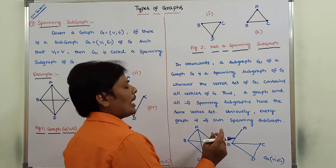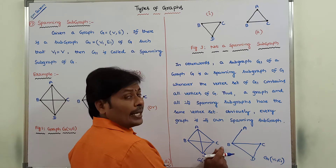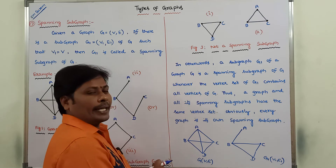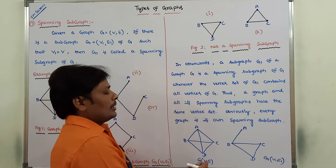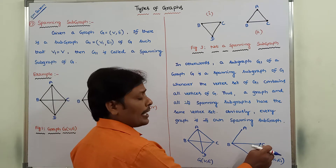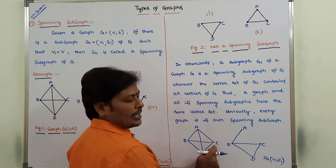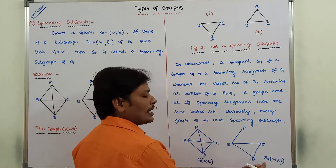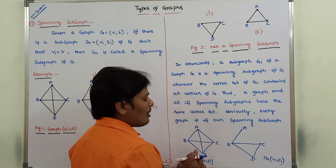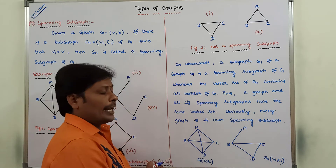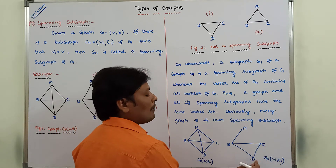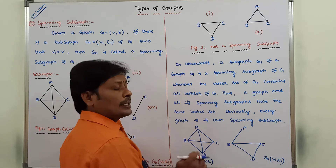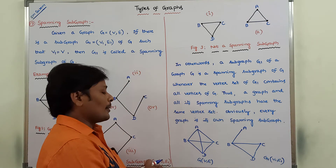Now, edges. A comma B is there in G1, and A comma B is also there in G. Next, B comma C is there in G1, and B comma C is also there in G. Next, B comma D is there in G1, and B comma D edge is also there in G. Next, C comma D edge is there in G1, and C comma D edge is also there in G.